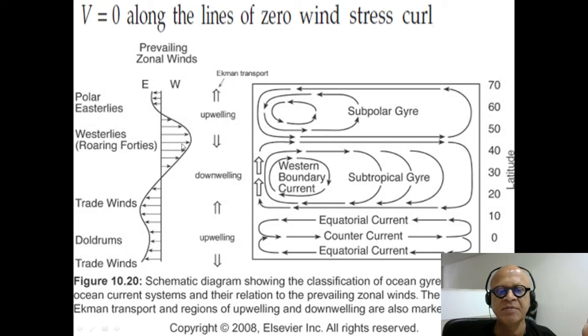and the mid-latitude westerlies and polar easterlies. We can take the curl, very straightforward in this case, just the meridional derivative of the zonal wind stress, and it gives us these circulation gyres with the Sverdrup theory.